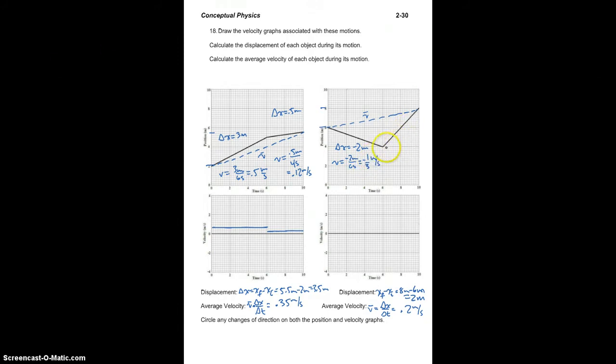On the other segment, our delta x, we go from 4 to 8. So delta x is 4 meters and the velocity is 4 meters in 4 seconds, or 1 meter per second.